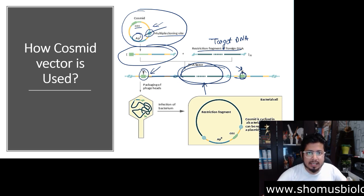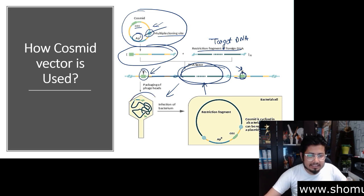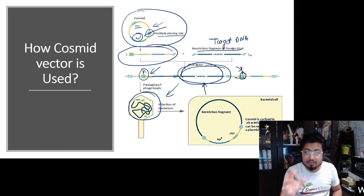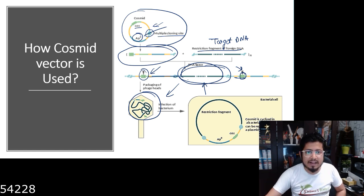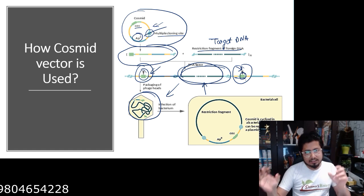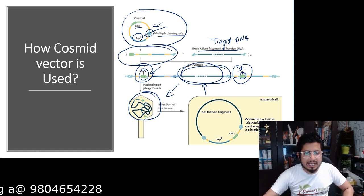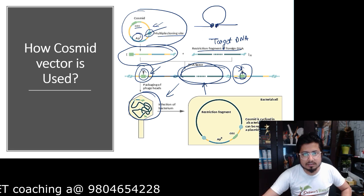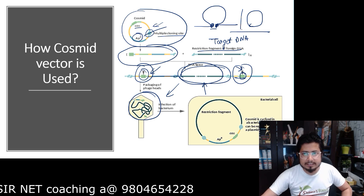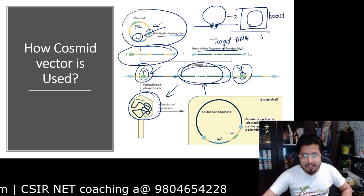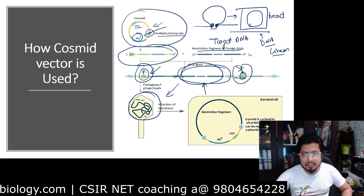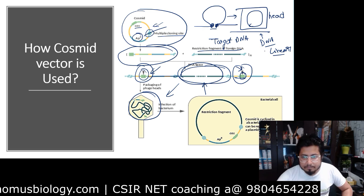Having the target DNA flanked by cos sites on both sides is very important because without this arrangement, packaging of the target DNA inside the phage head is not possible. During packaging, the cos sites come close to each other and fuse, so this portion is packaged into the phage head and the rest remains as linear DNA.